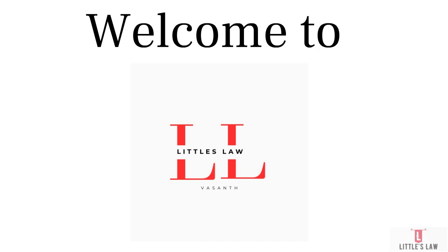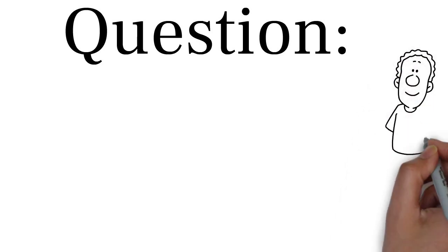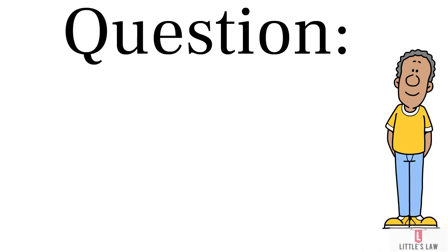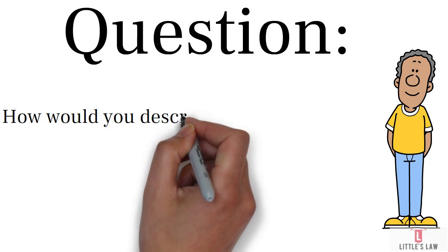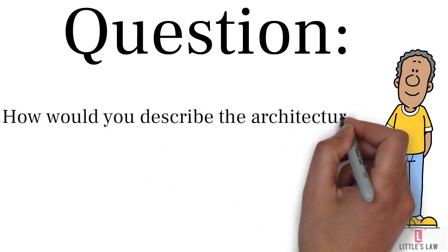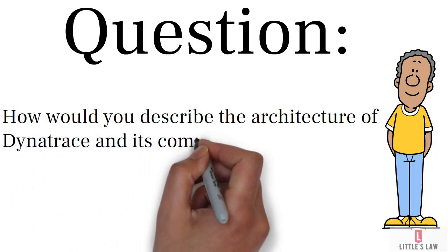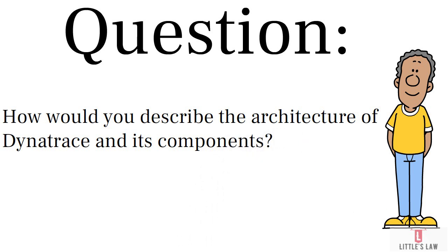So the question here is: how would you describe the architecture of Dynatrace and its components? We have to explain the architecture and its components because this is very important for you to know — the basics of Dynatrace, like how does it work and what are all the components. Dynatrace is a comprehensive observability platform designed to provide real-time insights into the performance and health of complex software environments.